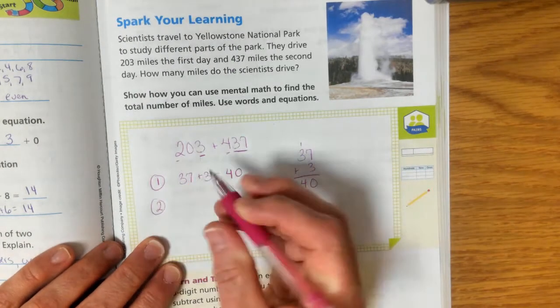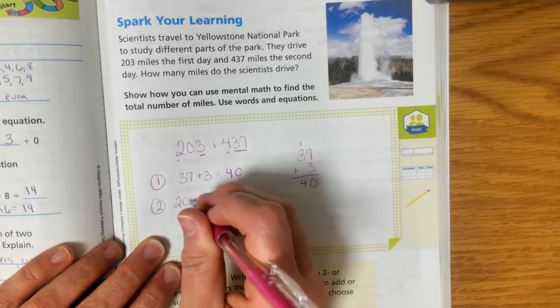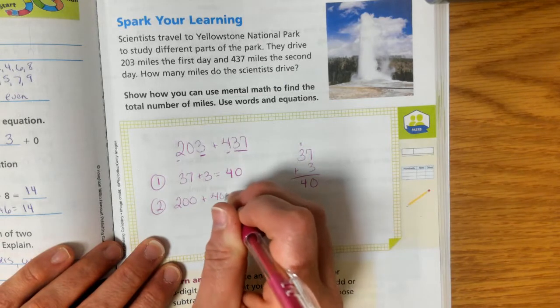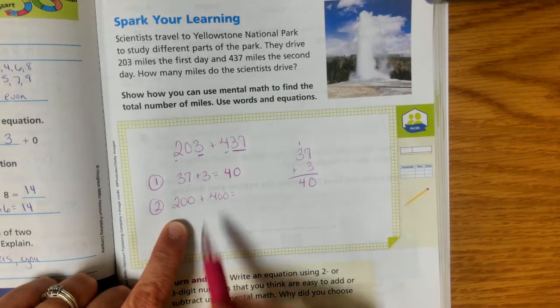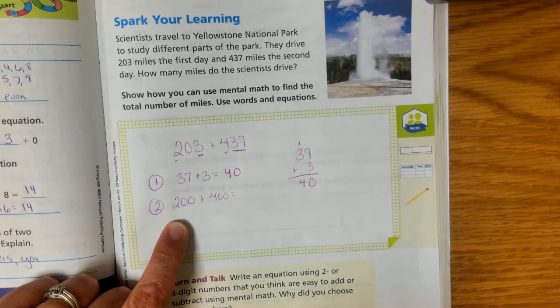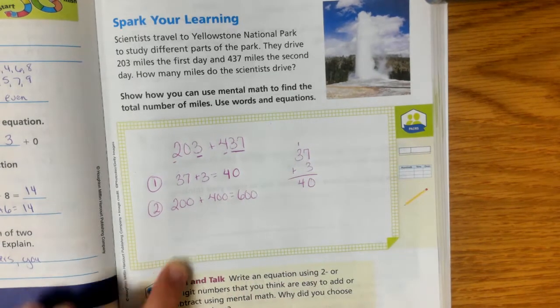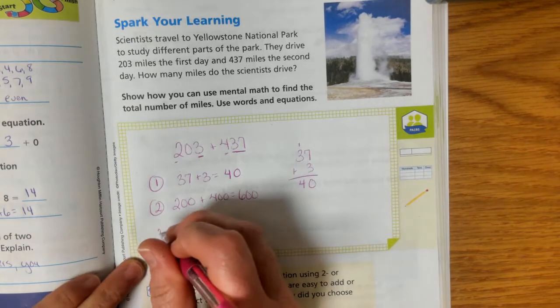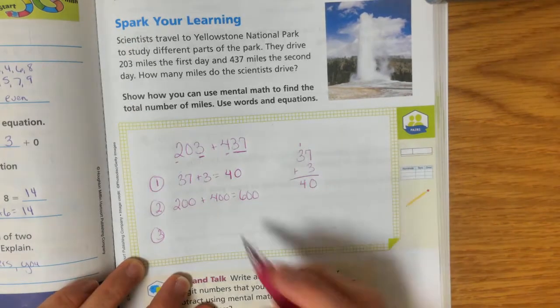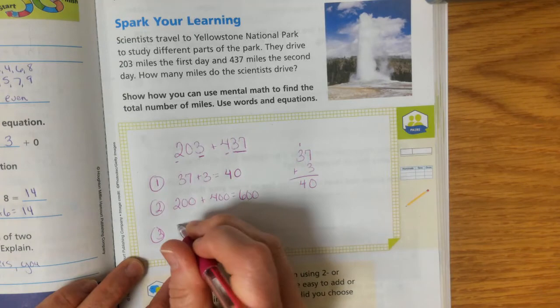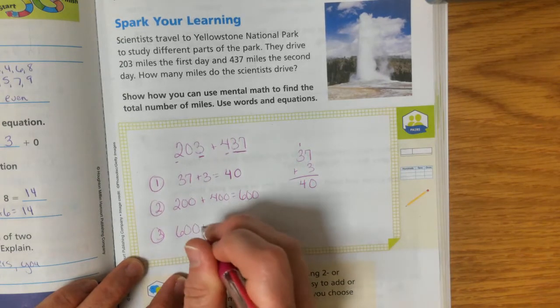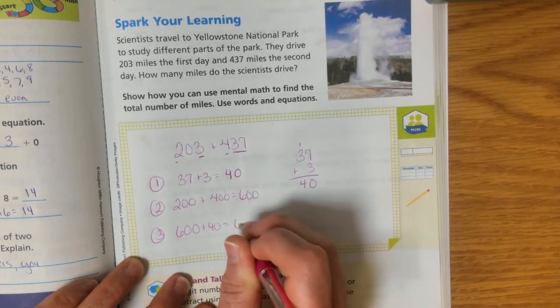So then what do I have left? I have 200 and I have 400. So my second step could be to add 200 plus 400. When I add 200 and 400, I know in my head that 4 plus 2 is 6, and then 0 is added together. So now my third step is to put these all together. 600 plus 40 equals 640.